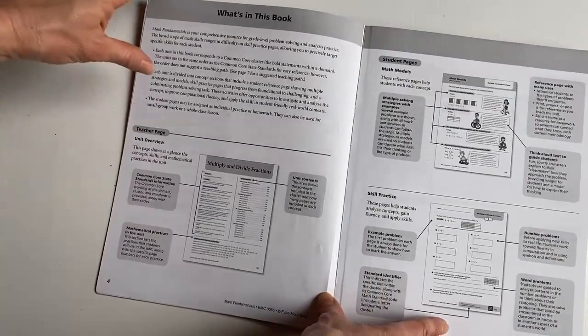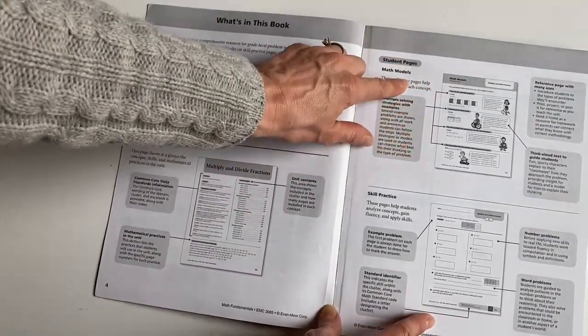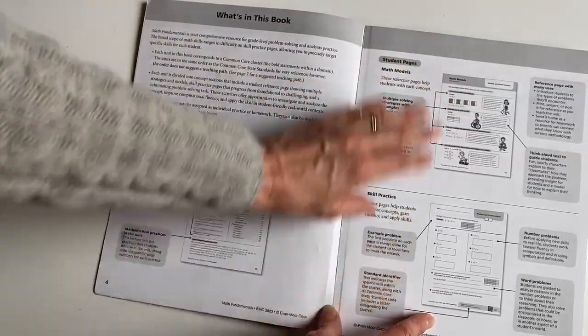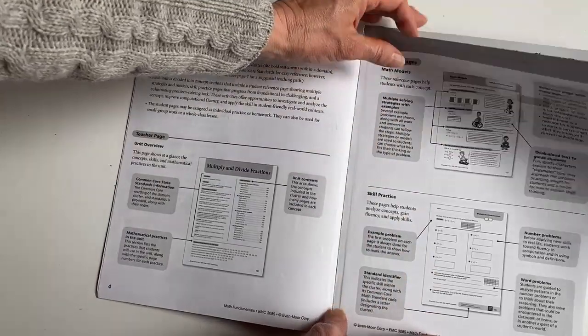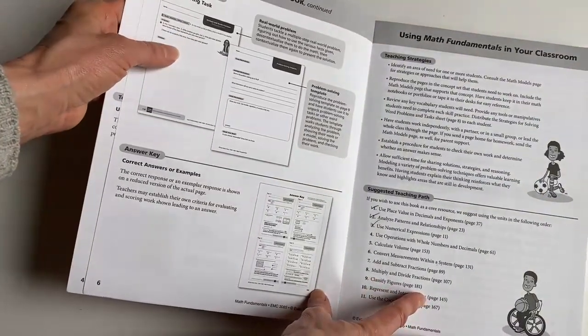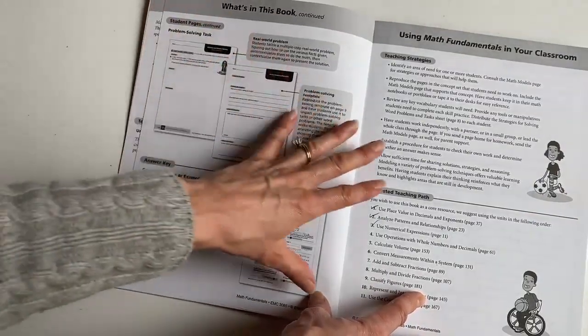So there is an explanation about the teacher overview page, the student page, which is the math models teaching them the lesson, but you do this with your child typically. And then the skill practice pages. There is an answer key at the back, by the way. And I like that the very last page in its unit actually could be used for assessment. So I'll show you that as well.